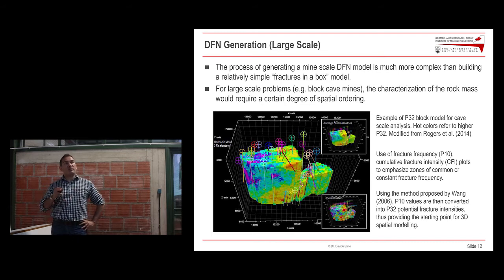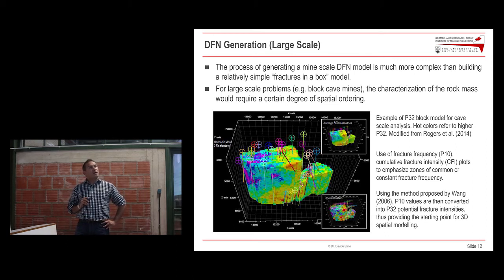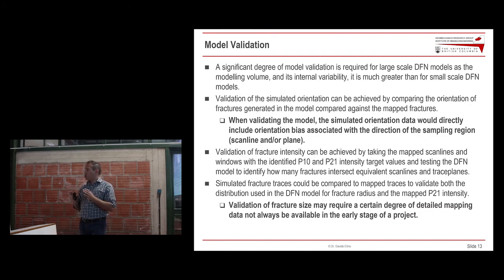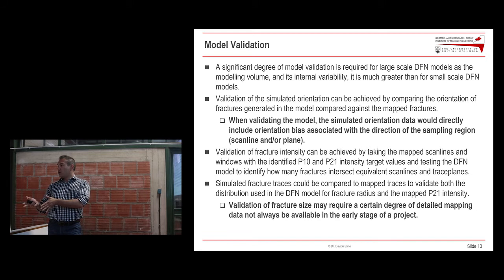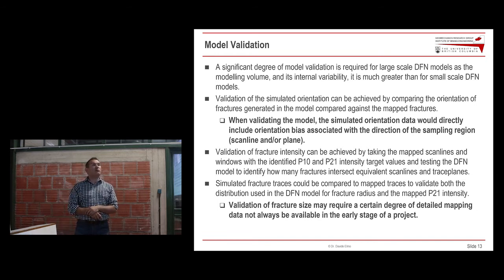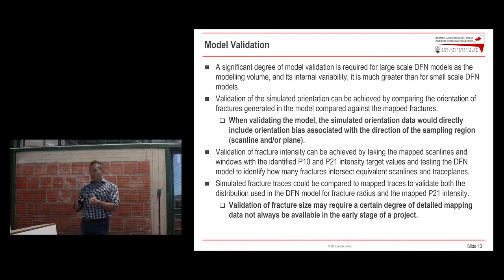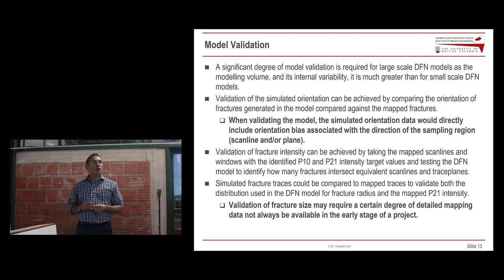At the kilometer scale, major features must also be included. Once you build the model, you should always validate it — comparing orientation and intensity between what was mapped and what the model produces. The data most difficult to validate is fracture size, because sometimes we don't have access to it. Later in the presentation we'll discuss the limitation from this lack of data in terms of the uncertainty that is built into the model.